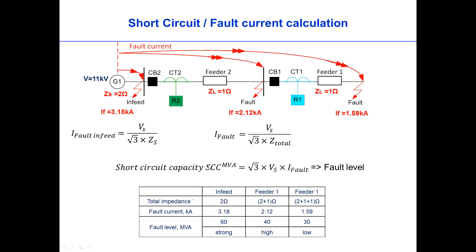If we look at the summary of these fault levels against the impedances at the fault level, at the infeed, the total fault current is 3.18 kilo amp. At feeder two, it is 2.12 kilo amp, which is this one.